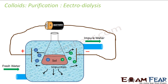The next method is electro-dialysis, which is faster than ordinary dialysis. Ordinary dialysis is slow because impurities don't naturally tend to come out fast. To speed it up, the same apparatus is used but an electric field is applied.